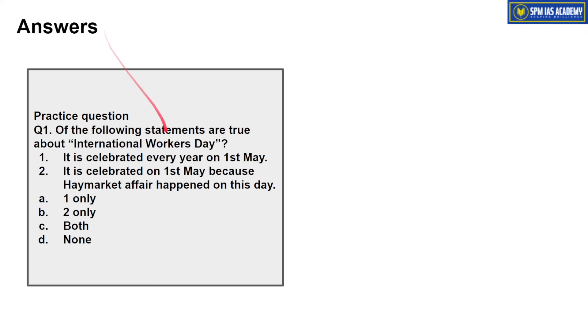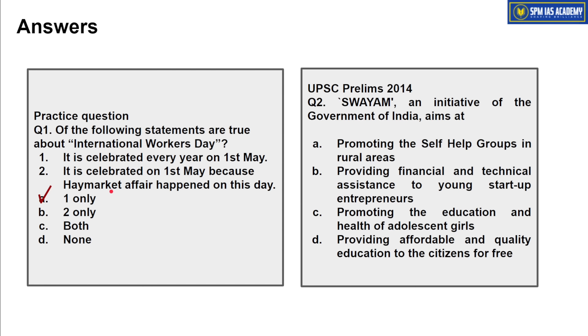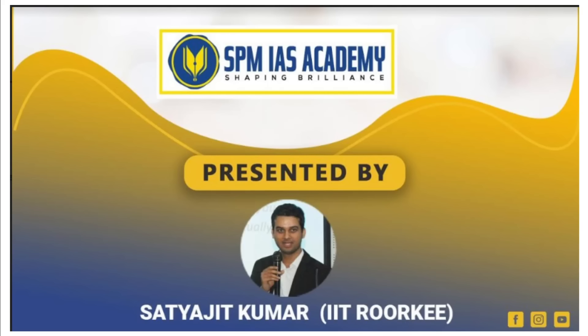Regarding Workers' Day, the first statement was correct but the second was wrong — the Haymarket affair occurred on 4th May, not 1st May. SPM IS Academy is dedicated to providing affordable and quality education to citizens for free. That's all from our side for today. Thanks for watching.